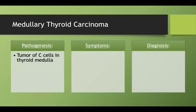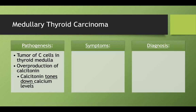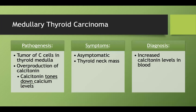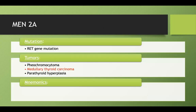Medullary thyroid cancer is a tumor of the C cells, or parafollicular cells, of your thyroid. These produce calcitonin, which tones down your calcium levels. Most people are asymptomatic and you'll just notice a thyroid neck mass. You can diagnose this by increased calcitonin levels in your blood or by biopsy.